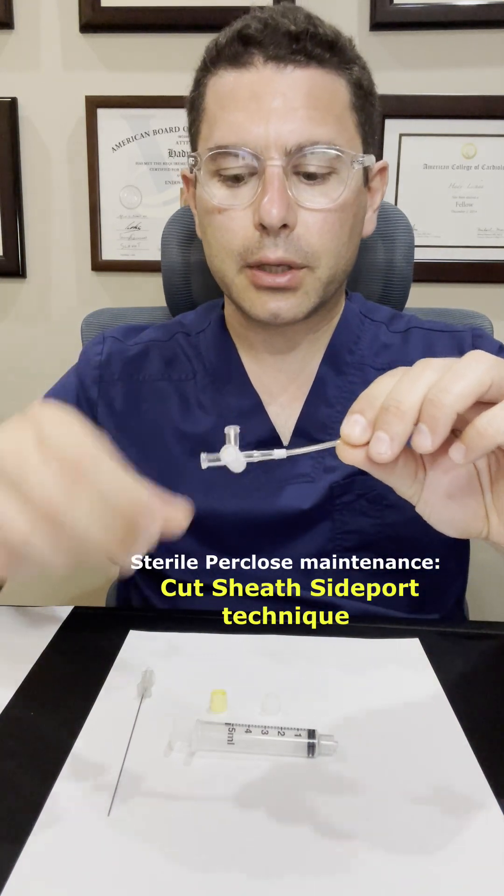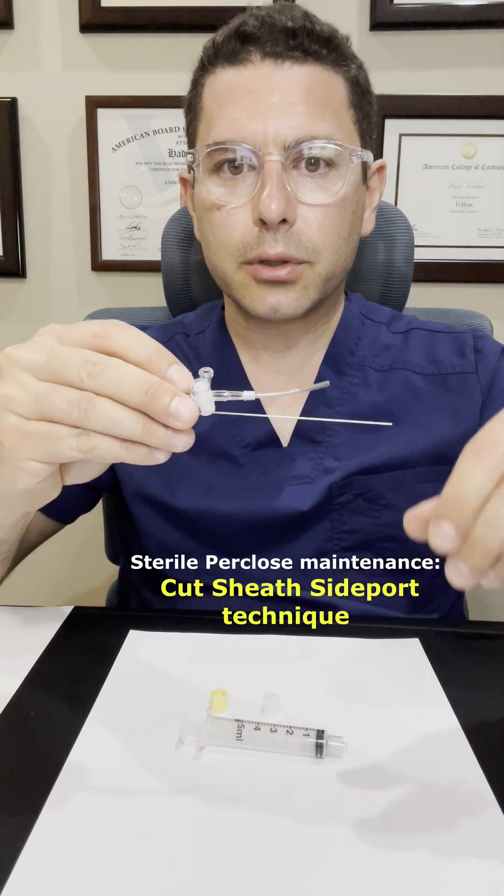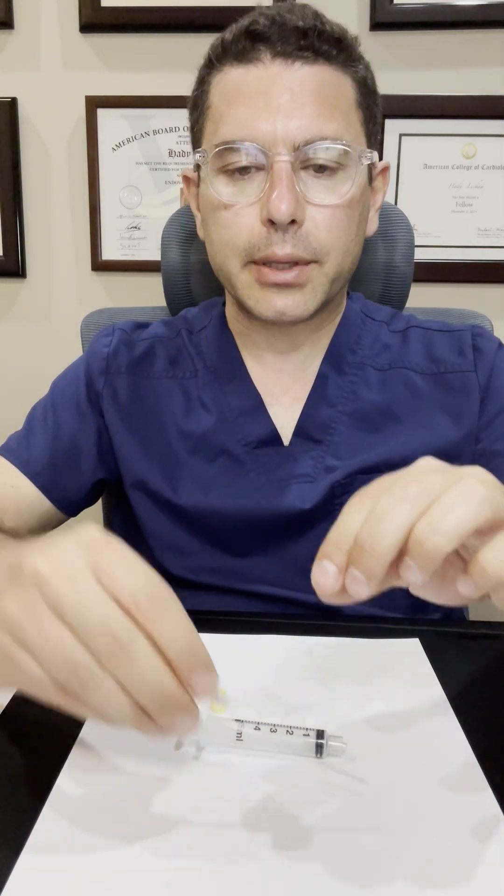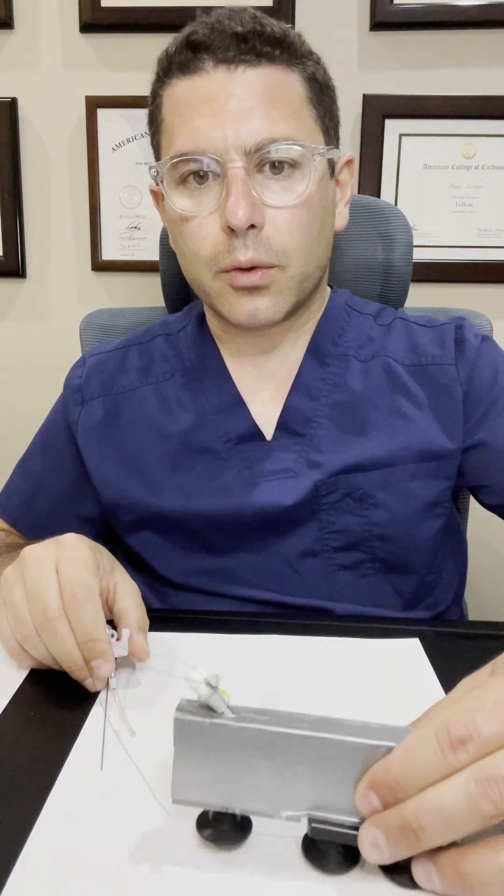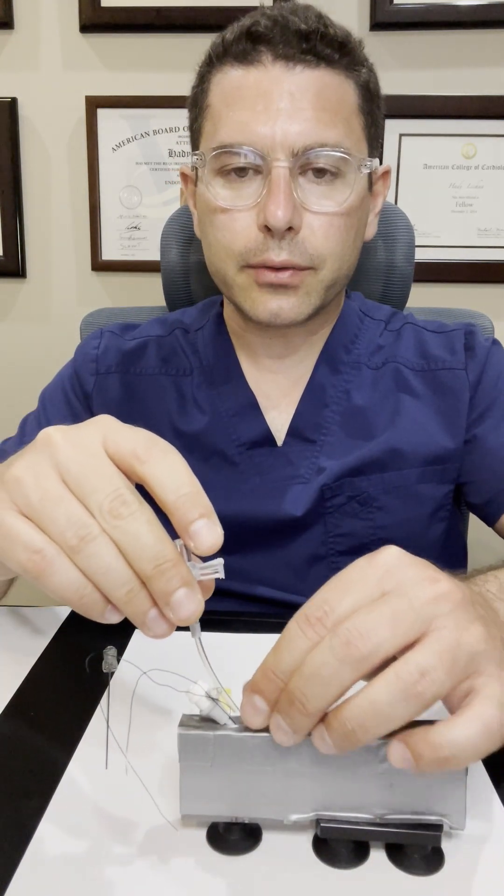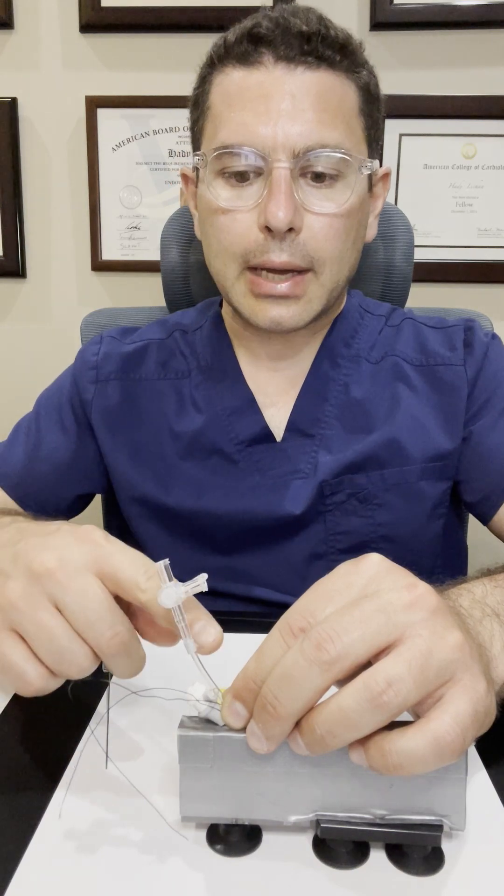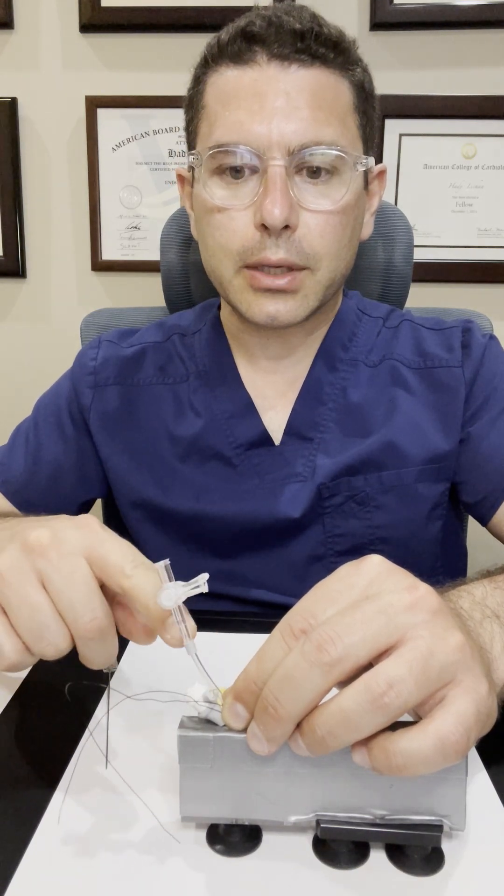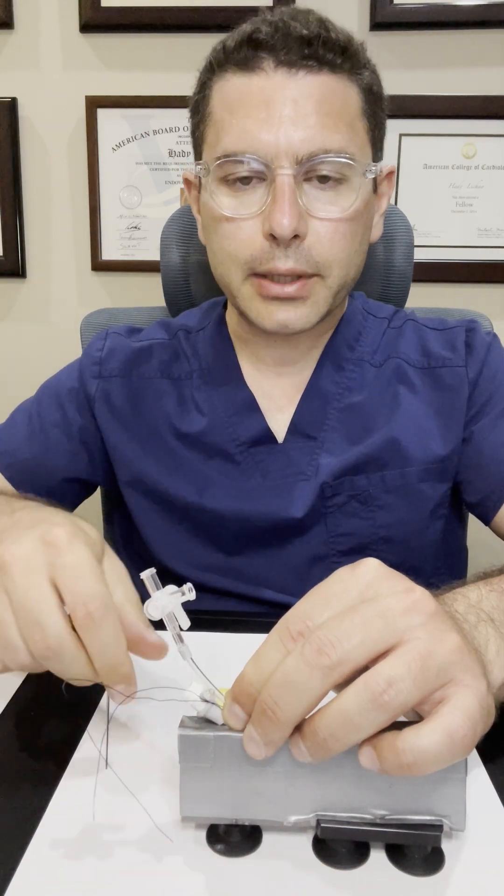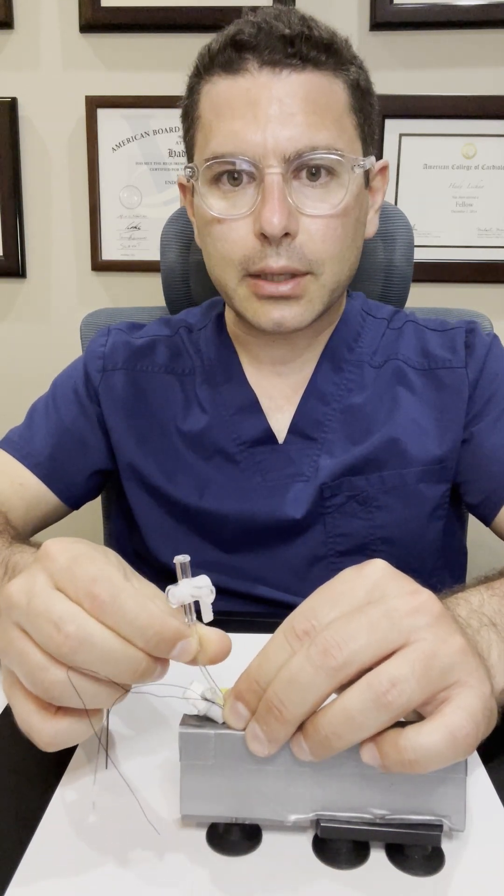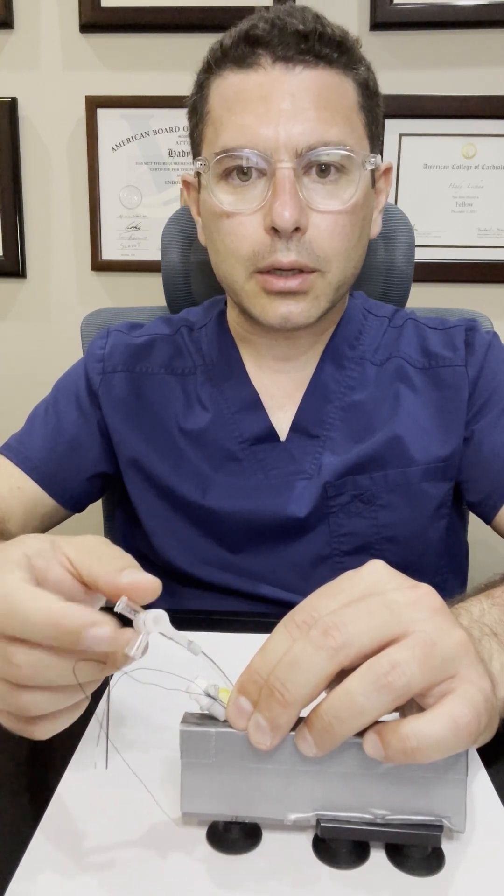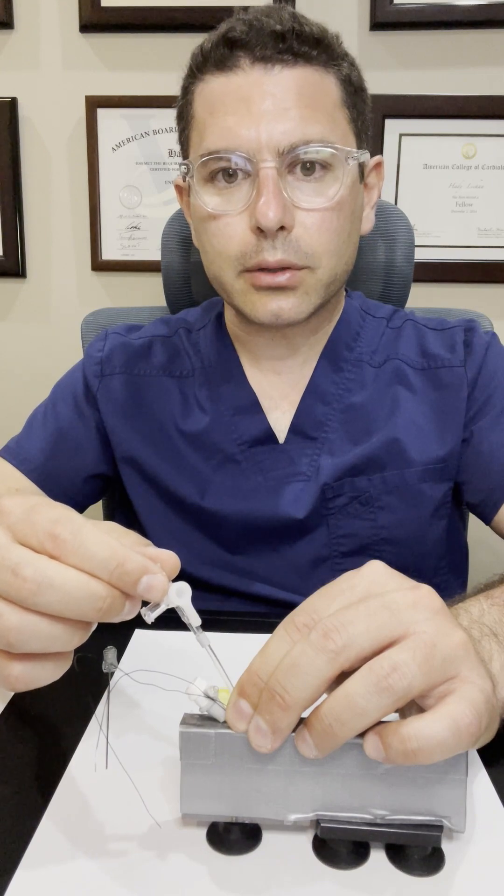Any sheath would be cut in a way that's relatively shorter than a needle introducer. Basically, ultimately that sheath side port is going to be housing those sutures in it, and then the non-locking suture will be locked in place in order to maintain tension on the suture itself and minimize the oozing around the arteriotomy.